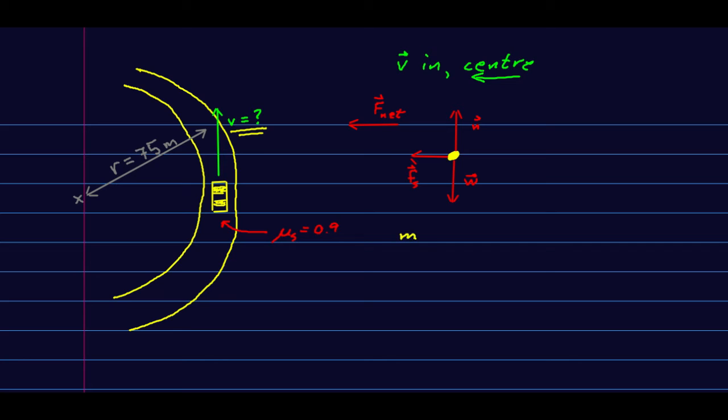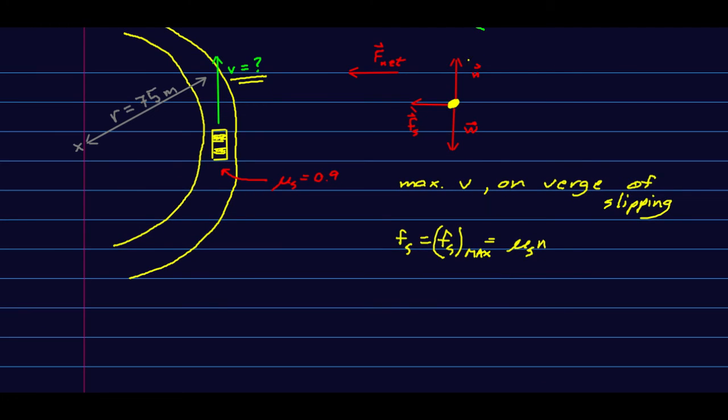If we want the max speed, then we are on the verge of slipping, and that means that our f_s is f_s max, which we've seen is μ_s N. I'll just quickly say this is one of these cases where we're on a horizontal surface, and so μ_s N is just μ_s m g.